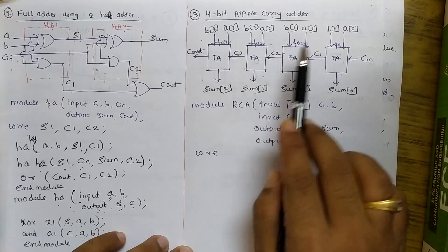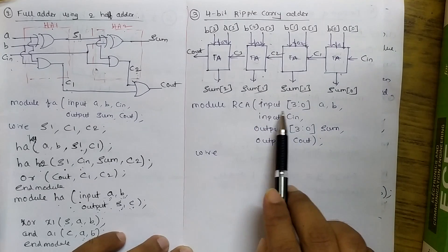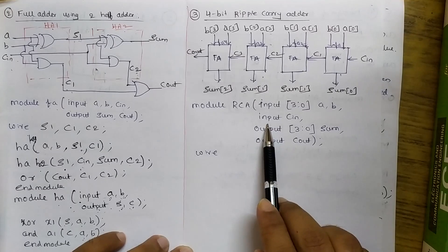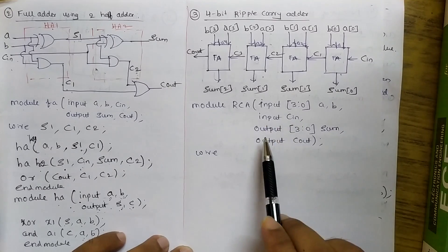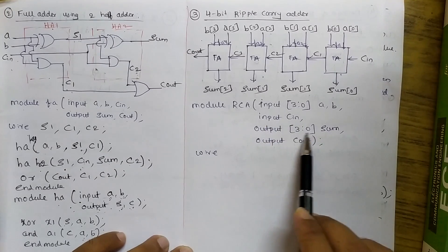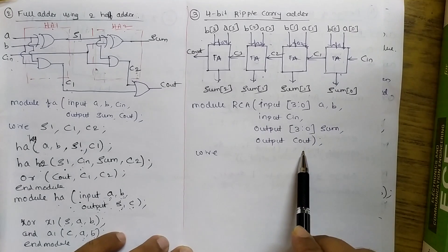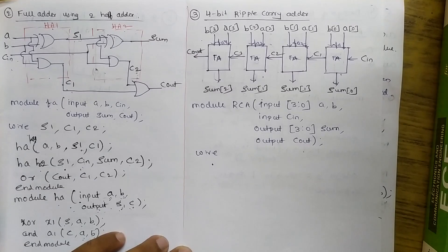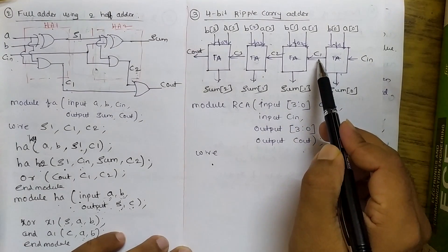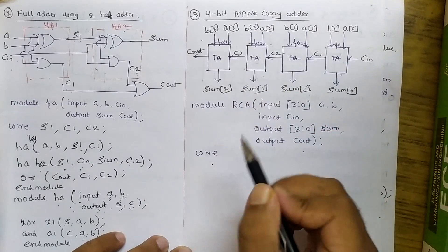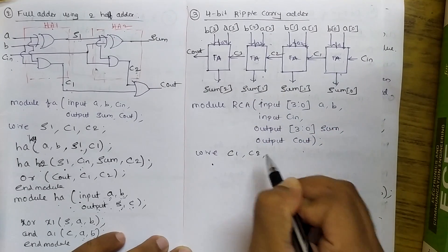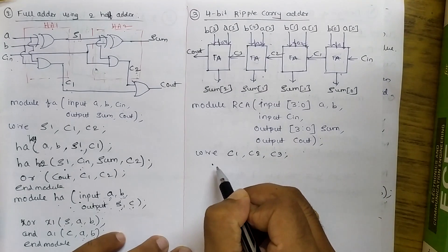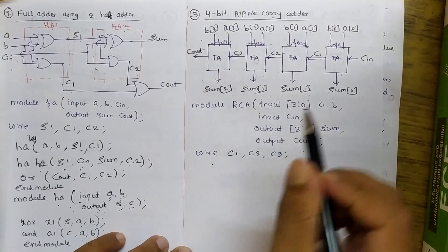For the 4-bit ripple carry adder, inputs A and B are four bits wide, declared as input [3:0] A, B. One input C_in is single bit. Output sum is four bits [3:0], and output C_out is single bit. The wires are the intermediates: C1, C2, and C3 are declared as wires.